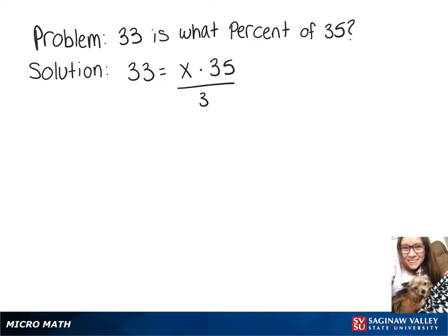So now to get x by itself we have to divide both sides by 35, that gives us an x value of approximately 0.943. So our percentage after we multiply that by 100 is 94.3%.